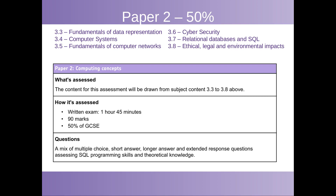Paper 2 is also 50% of the GCSE, so the whole lot is over these two papers. Paper 2 is 1 hour 45 minutes, so slightly shorter, but still 90 marks. This paper is on the theory side — how computers work and how they relate to other systems and other situations, rather than the practical side of building solutions.